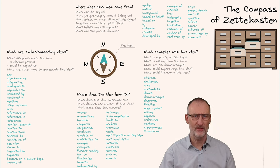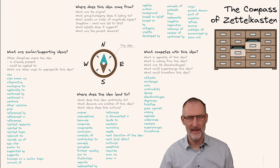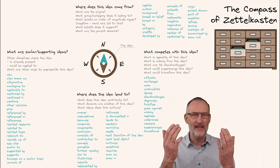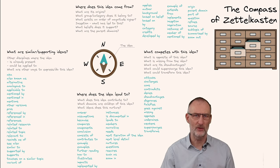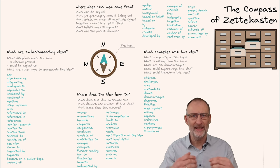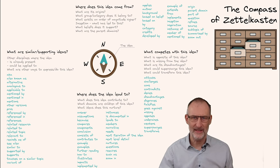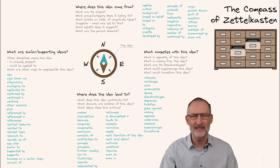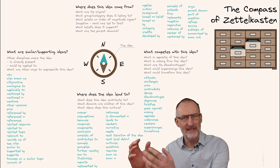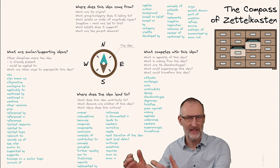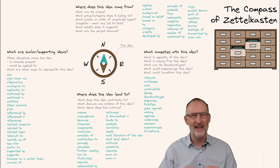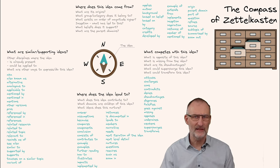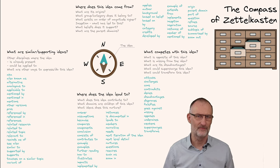If you're new to this concept, it's about looking at your ideas from various perspectives. Looking North explores the origins and bigger categories, while South identifies instances or examples. West delves into similar and supporting ideas, and East looks for ideas that compete with the central concept. As you can see, I have categorized my field names based on the directions of the compass.